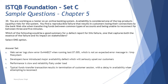That's the failure observed related to availability. The question asks: which of the following would be a good summary for a defect report that captures both the essence of the failure and its impact on the stakeholder? You might wonder if this is about availability testing, which is not in the foundation syllabus. It is not — the question is about writing a defect report, which is covered in chapter 5. The scenario could be anything; what matters is the defect report itself.